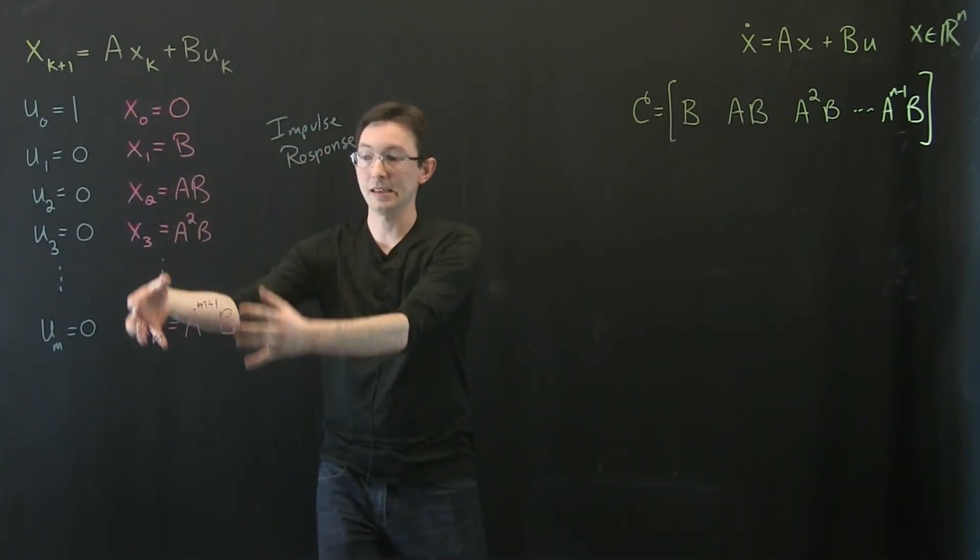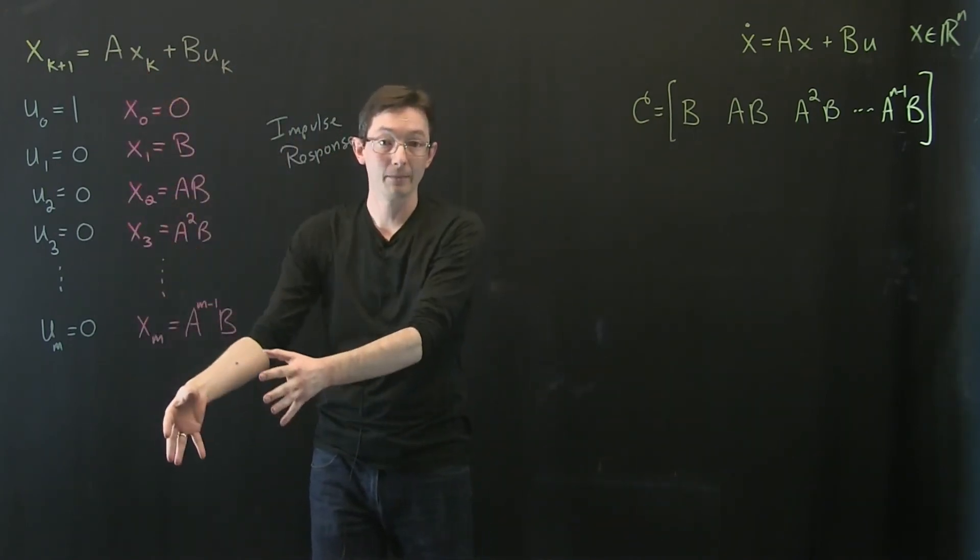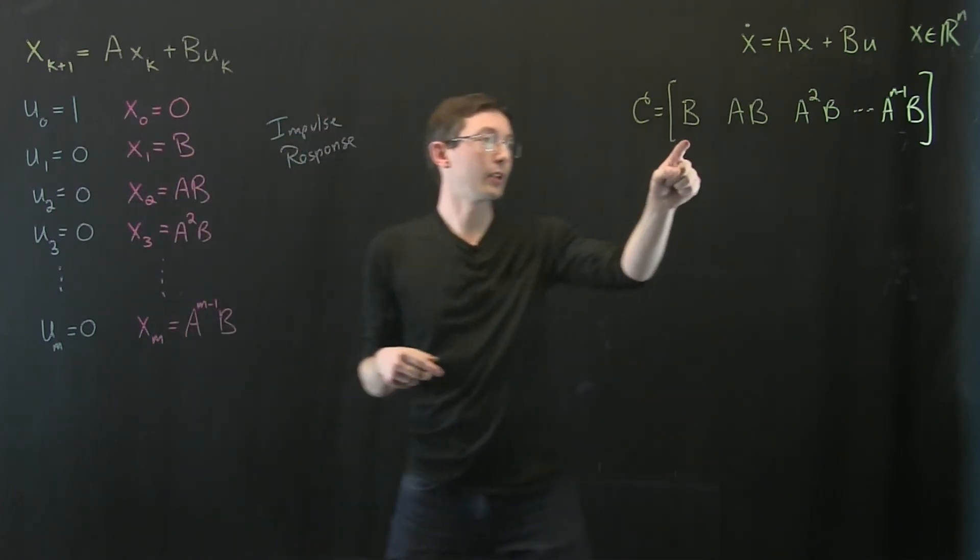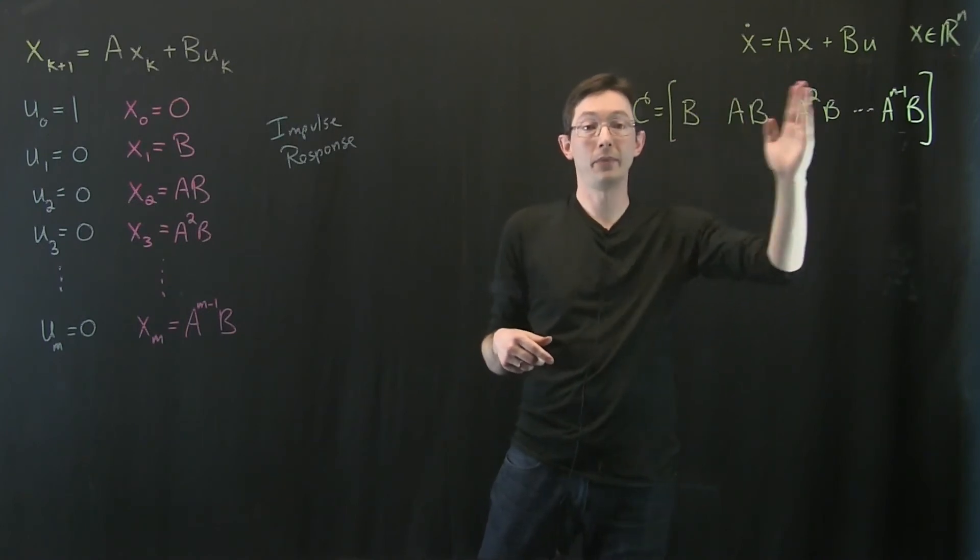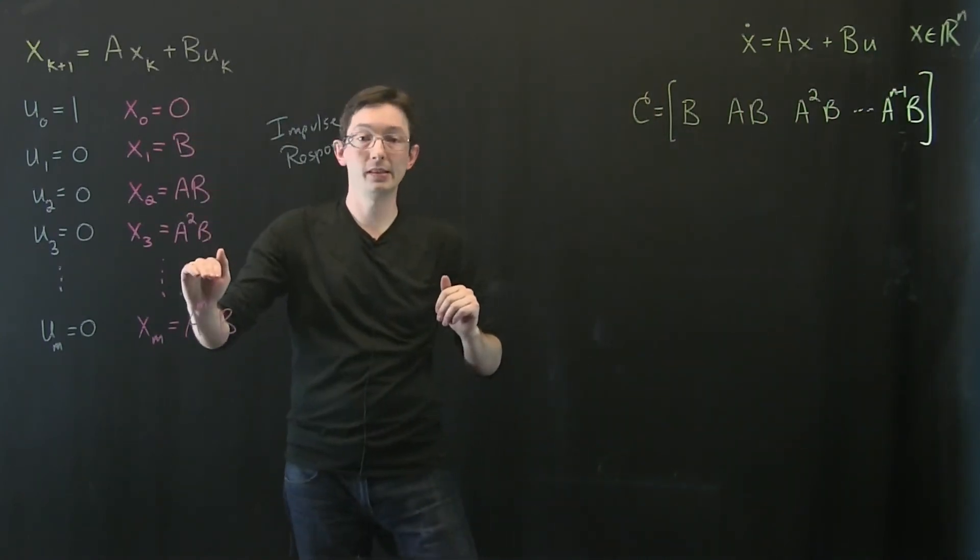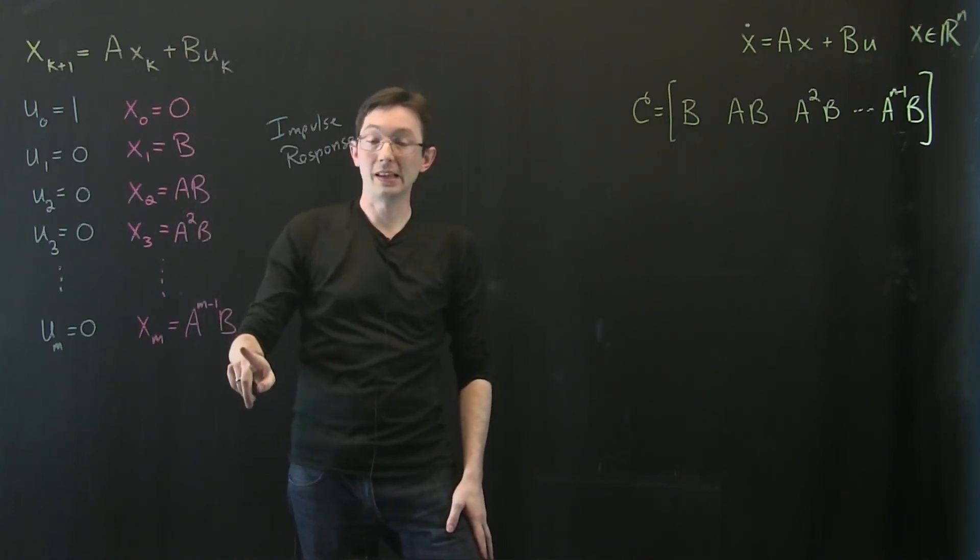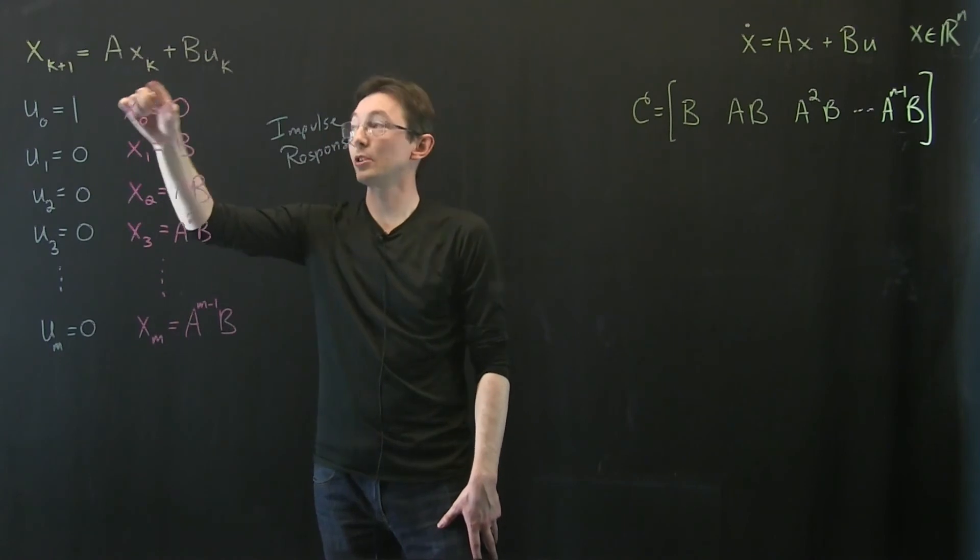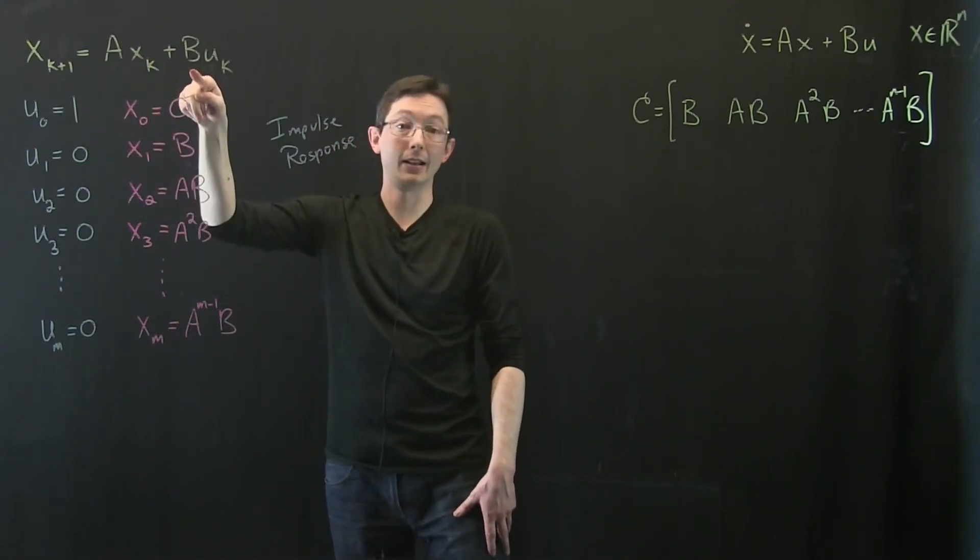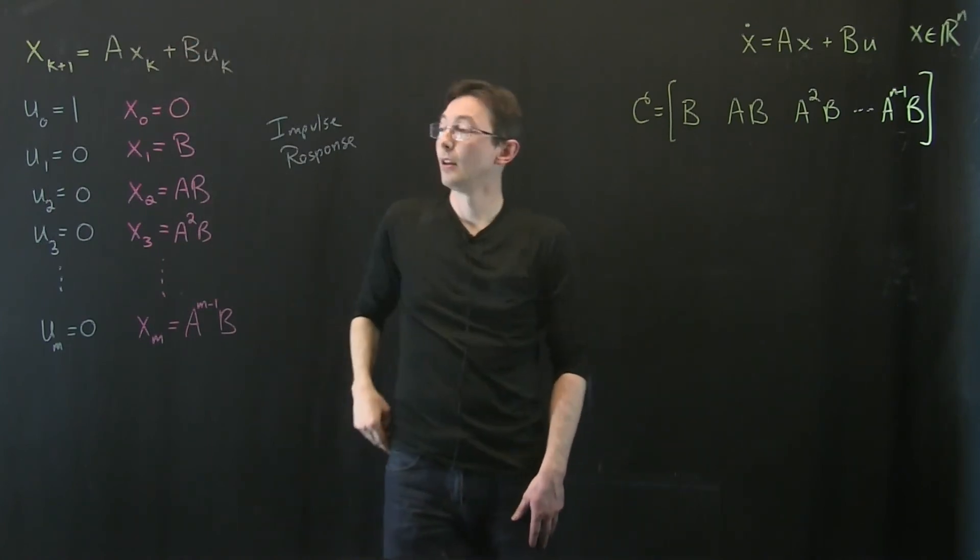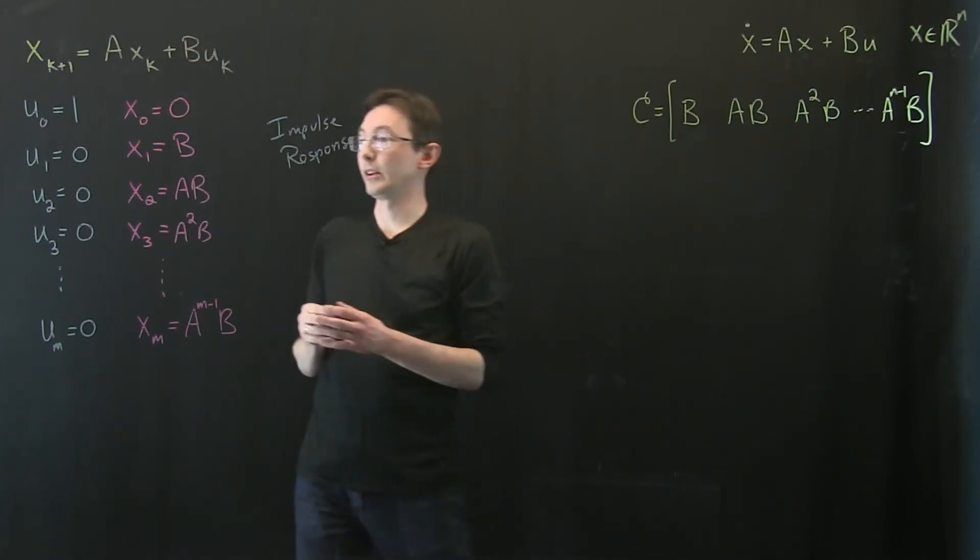So somehow this is the space that control can affect and there's some linear algebra that I'm glossing over, but basically I just have to look at the first n minus 1 of these impulse response measurements and as long as those hit all of the directions in Rn then I can essentially arbitrarily control this with that actuation input column vector b. Which I think is pretty neat.